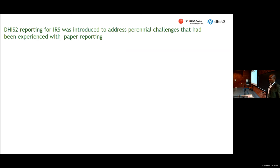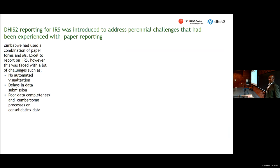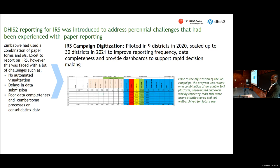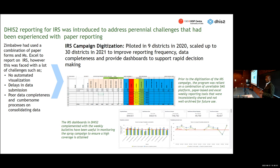DHIS2 was introduced to improve our reporting since we were relying on a paper-based system. We introduced the electronic platform to enhance better reporting for the country. Previously, we used Excel and sometimes WhatsApp to report data, then had to consolidate to come up with a report, which was a challenge. With digitization, it became much easier to improve our reporting. This is an example of the Excel system we used to consolidate district-reported data — you had to put in formulas to give insight into what had been reported.